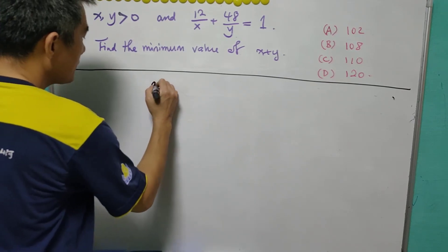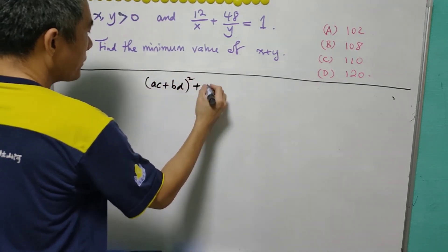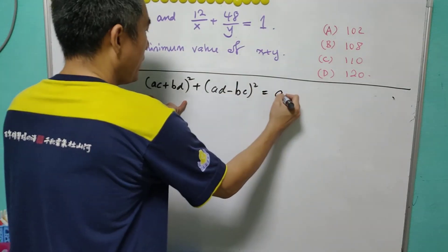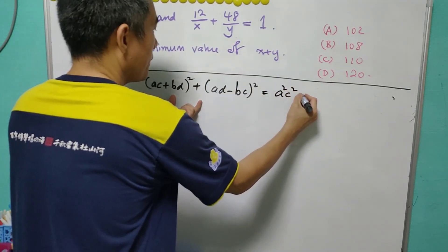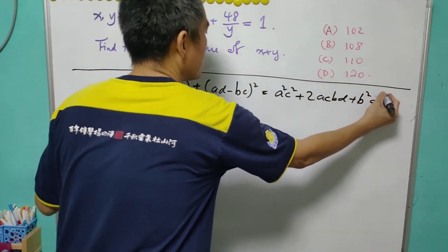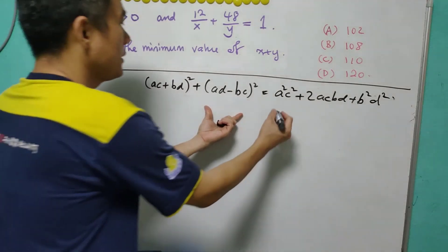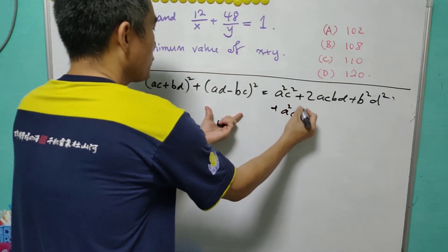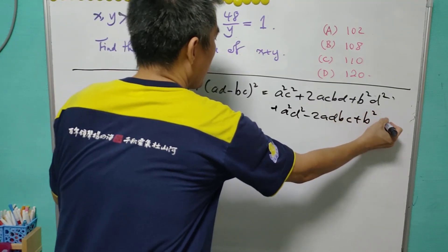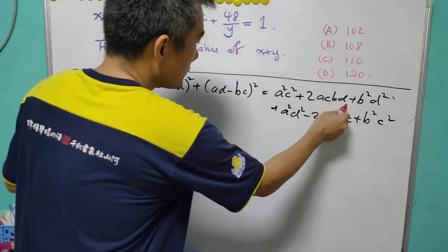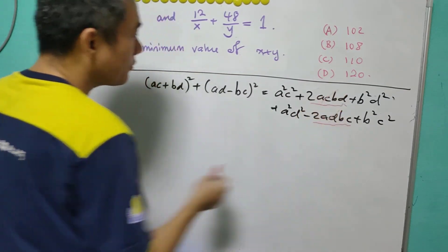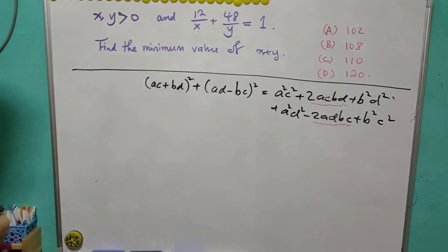We consider (ac + bd)² + (ad - bc)². This would be a²c² + 2acbd + b²d², and for the second one this will be a²d² - 2adbc + b²c². We can see that this is 2abcd and 2abcd. They can be cancelled off.